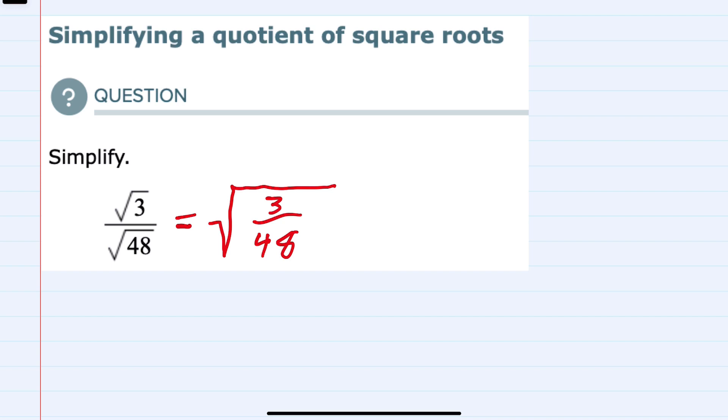I can simplify this fraction. In this case both the 3 and the 48 are divisible by 3, so we can reduce that fraction and say that 3 divided by 3 is 1 and 48 divided by 3 is 16.